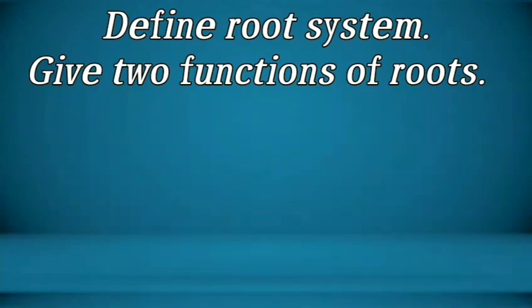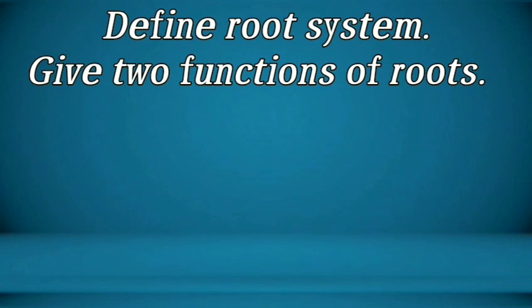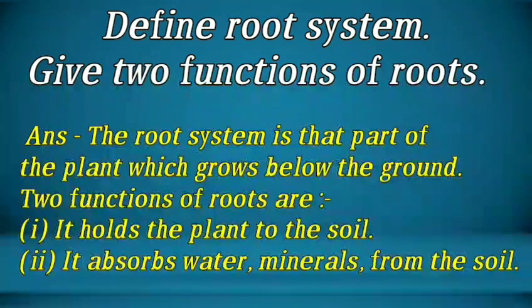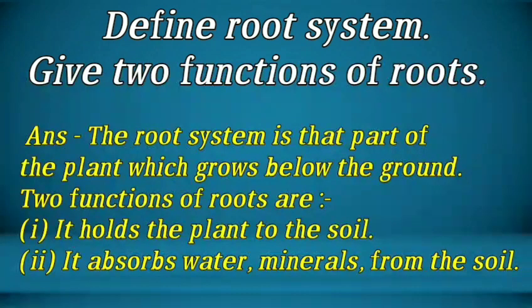Question number 10: Define root system and give two functions of roots. The root system is the part of the plant which grows below the ground. Two functions of roots are: first, it holds the plant to the soil; second, it absorbs water and minerals from the soil.